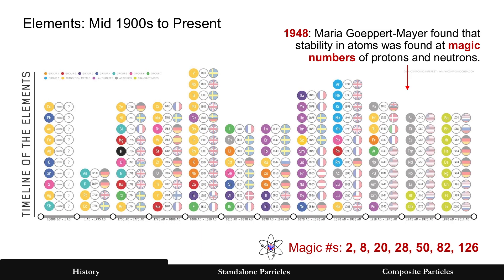Around the middle of the 1900s, Maria Goeppert Mayer found stability in atoms at certain numbers. These are called magic numbers of protons and neutrons. You can see the numbers at the very bottom: 2, 8, 20, 28, 50, and so on — magic numbers.